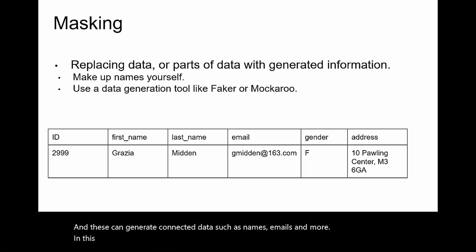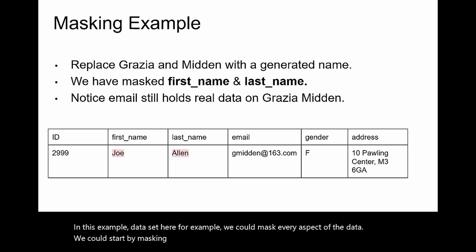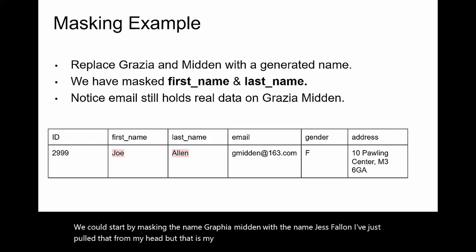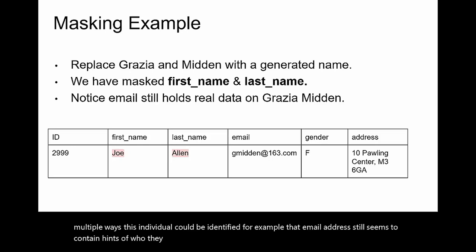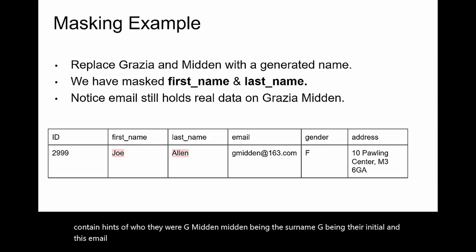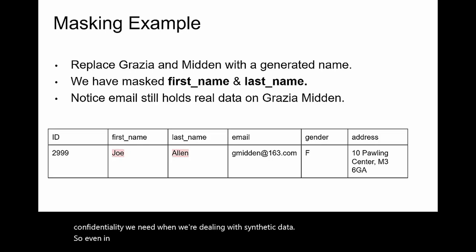In this example dataset, we could mask every aspect of the data. We could start by masking the name Graphia Midden with Joseph Allen. Although we have masked this data, there are still multiple ways this individual could be identified. For example, their email address still contains hints of who they were — G Midden, Midden being their surname, G being their initial. This email address is enough to uniquely identify this individual, so we don't even have GDPR compliance here. Even in this simple case we can make quite dangerous mistakes, and we'll go into more detail with this example shortly.